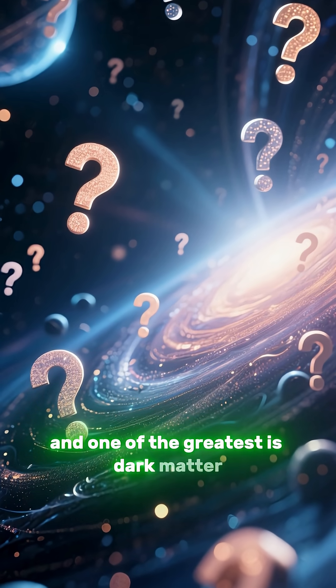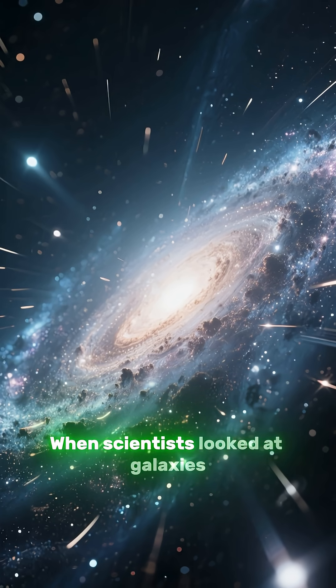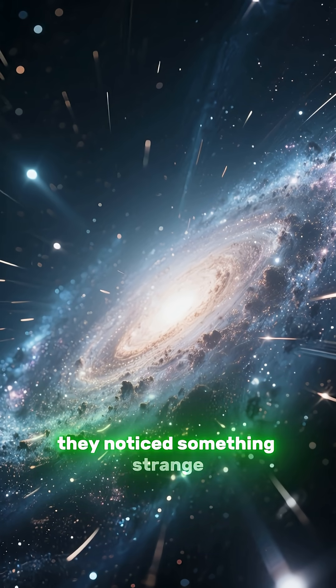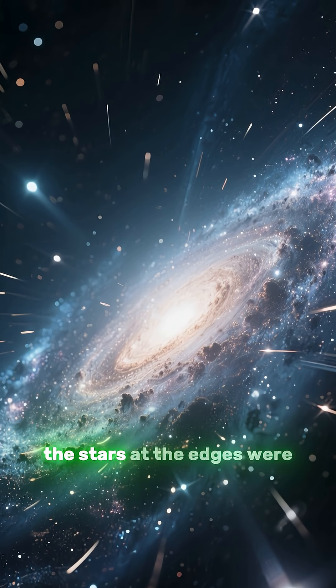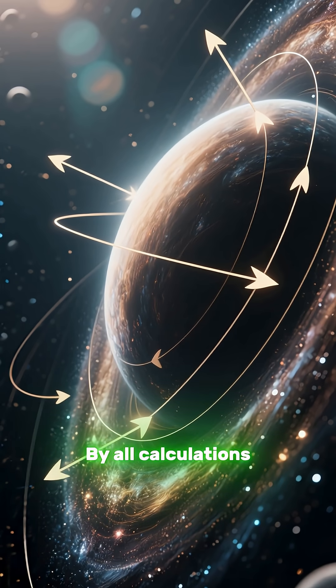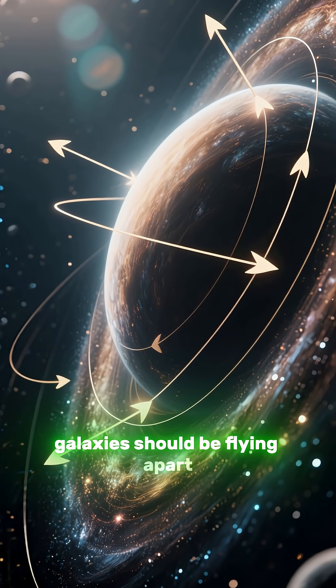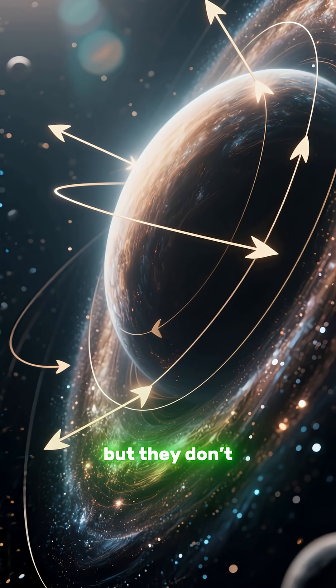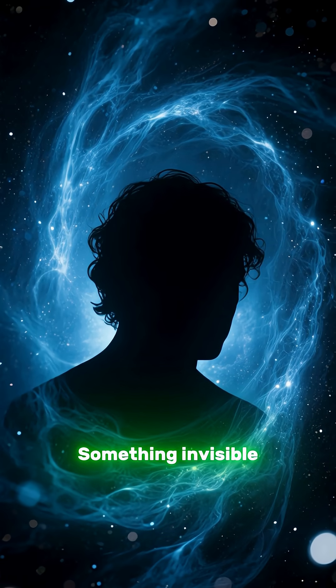When scientists looked at galaxies, they noticed something strange. The stars at the edges were moving far too fast. By all calculations, galaxies should be flying apart, but they don't. Something invisible, something we cannot see, must be holding them together.